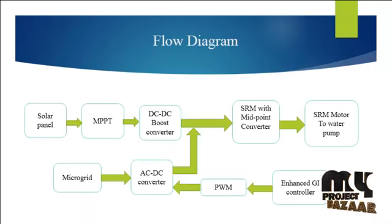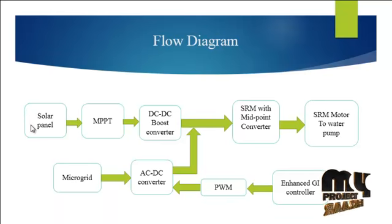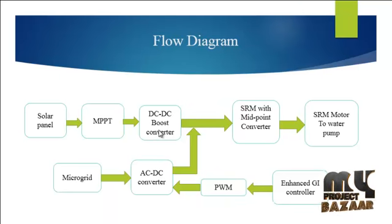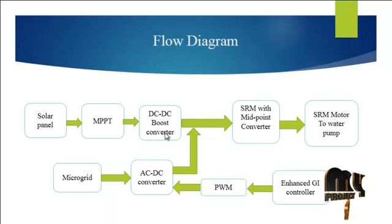Now we are going to discuss the flow diagram of the product. The proposed system uses different modeling blocks. First we have the solar panel — the input irradiance level is received by the solar panel, then it is passed to the maximum power point tracking (MPPT) technique, which is a well-known technique. Then it passes to the DC-to-DC boost converter, which boosts the solar power to its maximum level. From there it passes to the switched reluctance motor with the midpoint converter.